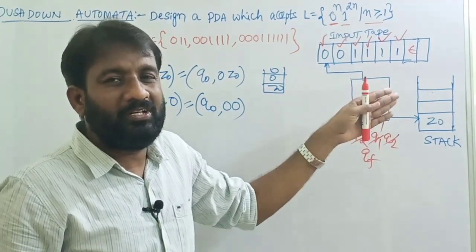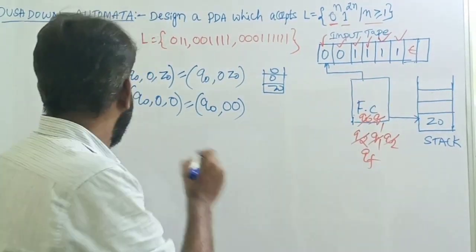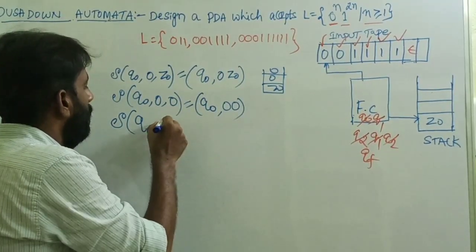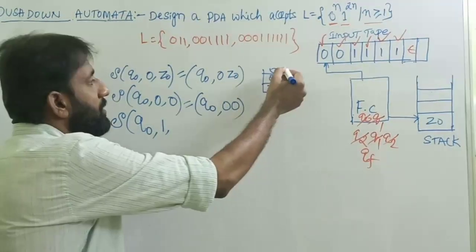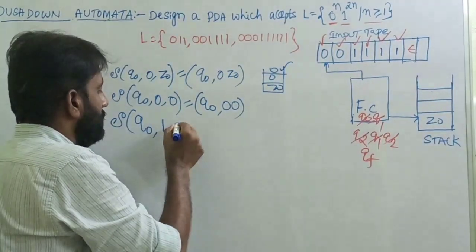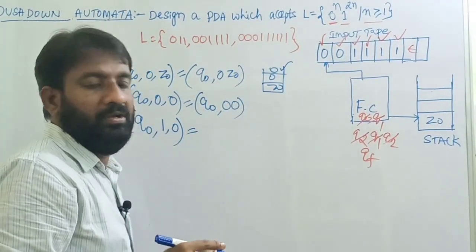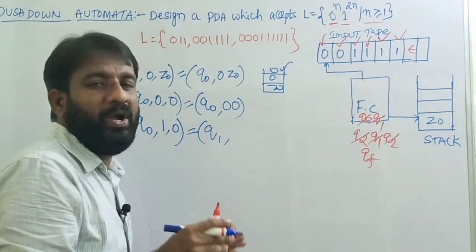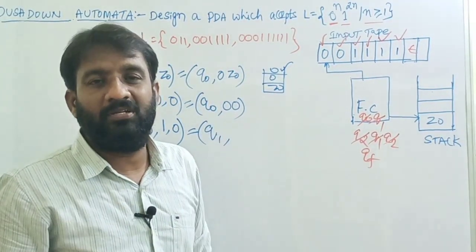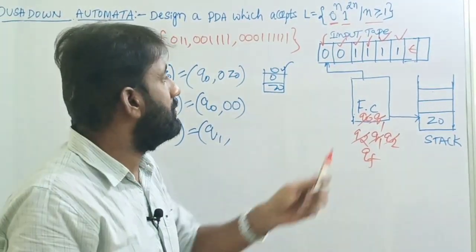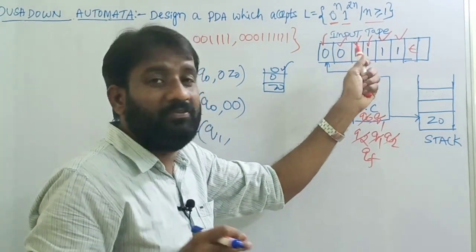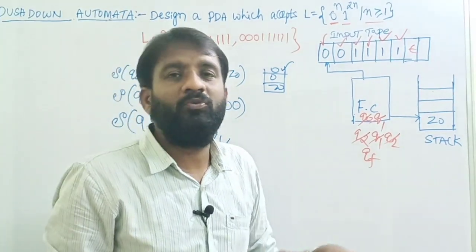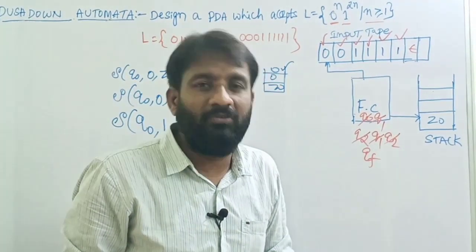Once all zeros are read and ones begin: δ(q0, 1, 0) — top of stack is zero — change to new state q1 without push or pop operation. The reason is we are reading only the first of the two ones; for every two ones we will do one pop operation to remove a zero from the stack. Since no stack operation is done: δ(q0, 1, 0) = (q1, 0).